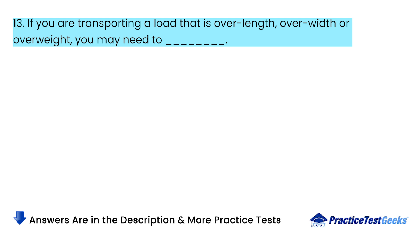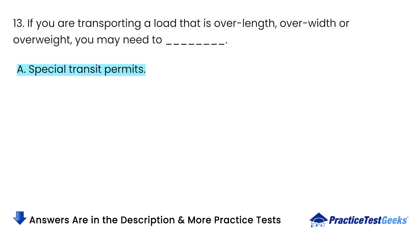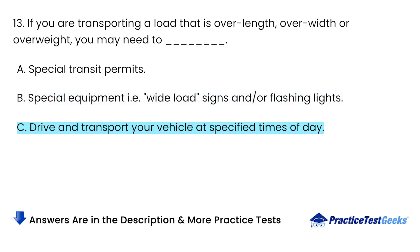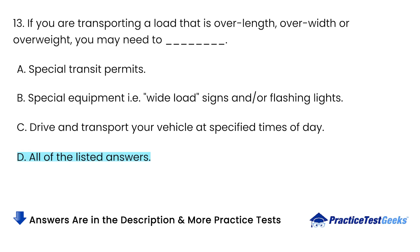If you are transporting a load that is over length, over width, or overweight, you may need: A. Special transit permits. B. Special equipment, i.e. wide load signs and/or flashing lights. C. To drive and transport your vehicle at specified times of day. D. All of the listed answers.